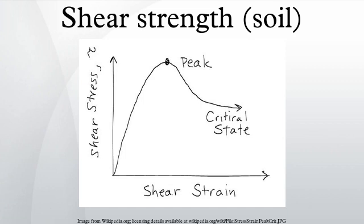The average normal intergranular contact force per unit area is called the effective stress. If water is not allowed to flow in or out of the soil, the stress path is called an undrained stress path. During undrained shear, if the particles are surrounded by a nearly incompressible fluid such as water, then the density of the particles cannot change without drainage, but the water pressure and effective stress will change. On the other hand, if the fluids are allowed to freely drain out of the pores, then the pore pressures will remain constant and the test path is called a drained stress path.